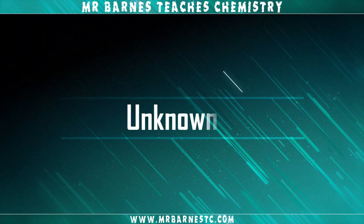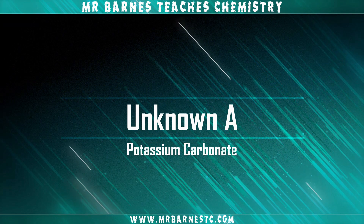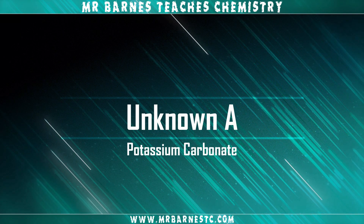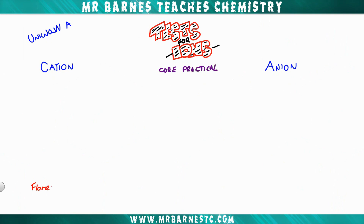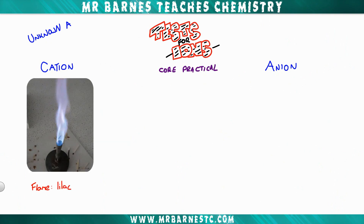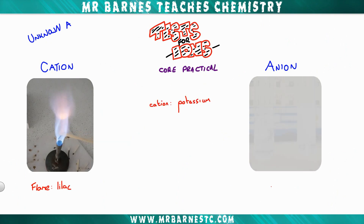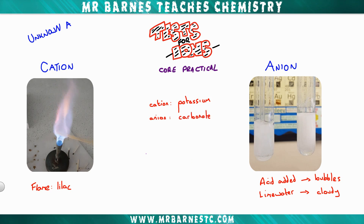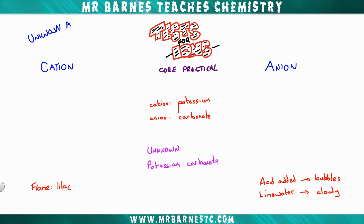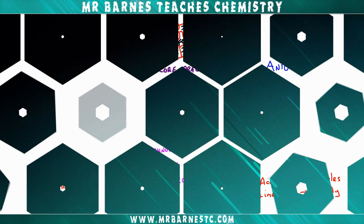Let's start off with unknown A — potassium carbonate. Put it into a flame; if the flame goes lilac that proves we have potassium. To prove the anion, carbonate: put an acid in and bubble the gas through lime water. If it goes cloudy we know we've got a carbonate present. Therefore the unknown would be potassium carbonate if we saw those two results.